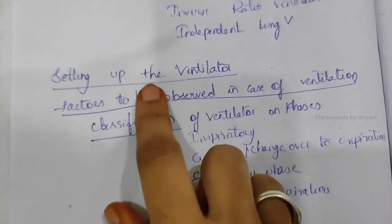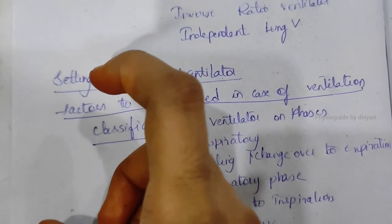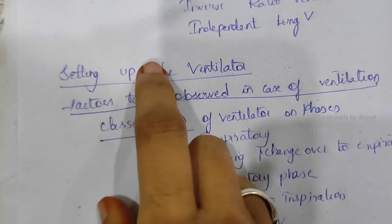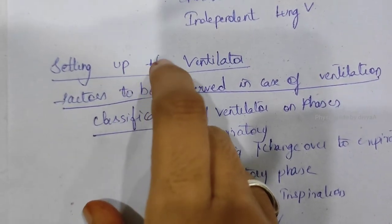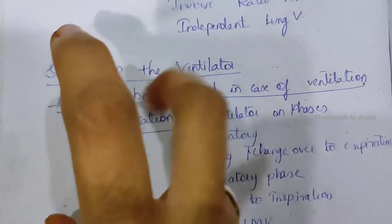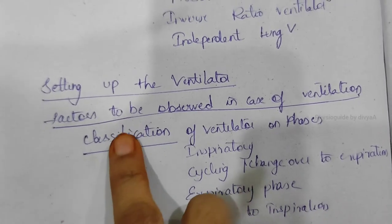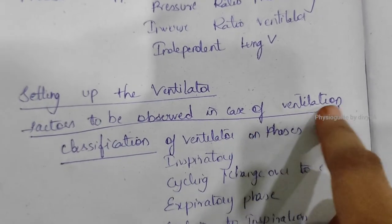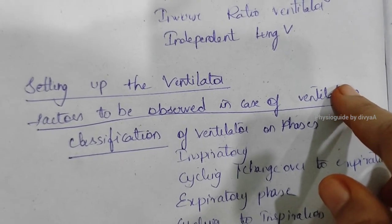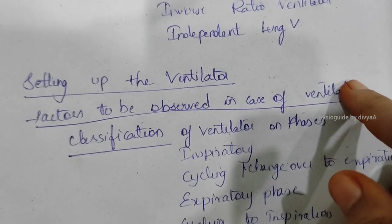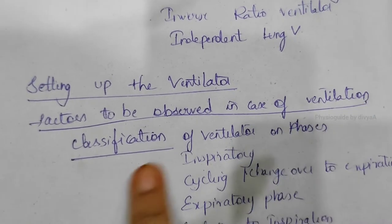Setting the ventilator: ensure airways are secure, and adequate sedatives, opiates, and muscle relaxants are given. Tidal volume is set normally; respiratory rate is set at 14–16 per minute; FiO2 usually starts at 100% oxygen and is decreased slowly. Factors to observe include vital signs such as BP, heart rate, and patient consciousness. Secretions should be removed periodically, and alarm function and oxygen saturation should be checked.